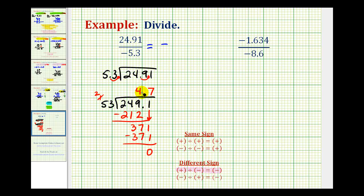So this quotient is 4.7, but we know for the original problem, this quotient has to be negative, so it's actually negative 4.7 for the original problem. Let's take a look at a second example.